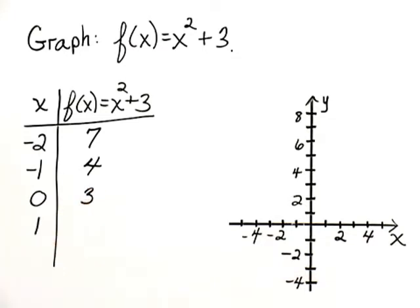We'll try x as 1. f of 1 would be 1 squared plus 3, or 4. And one more. If x is 2, f of 2 would be 2 squared plus 3, which would be 7.